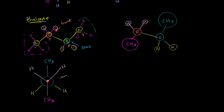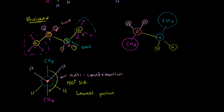The way we've drawn it, with the two CH3 groups as far apart as possible, is called the anti-conformation. The dihedral angle between the two methyl groups here is 180 degrees, and this is the lowest potential energy — the most stable. If that confuses you, think of it this way: a rock on the ground has lower potential energy than a rock 50 feet in the air. Lower potential energy means more stable and less likely to move.